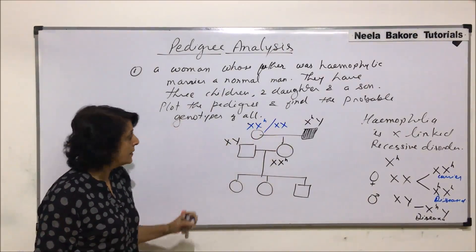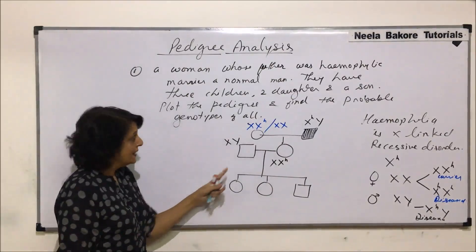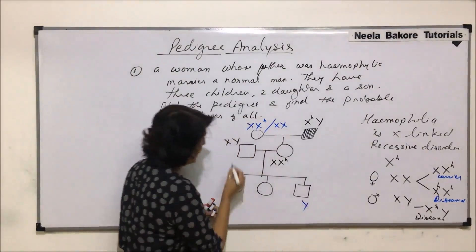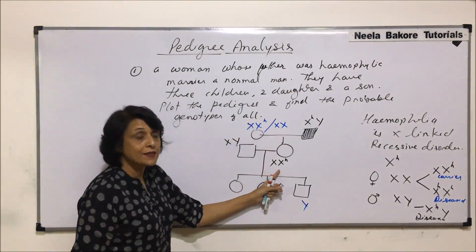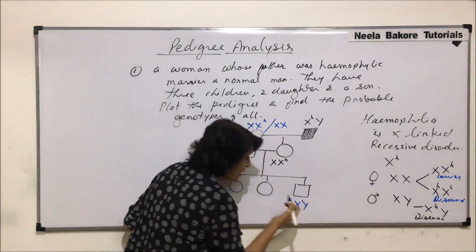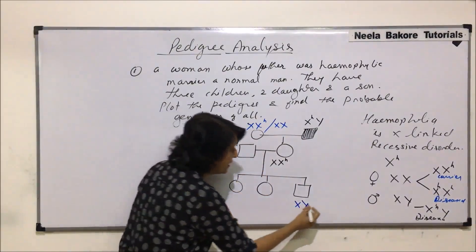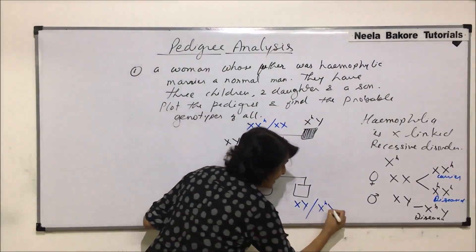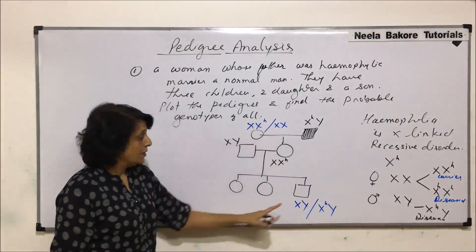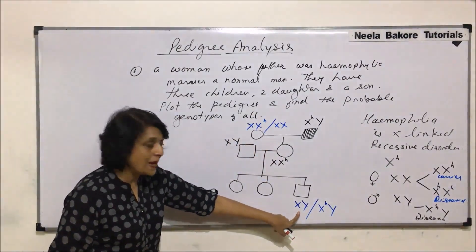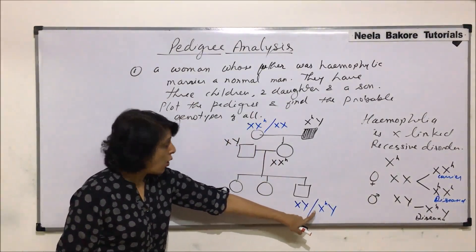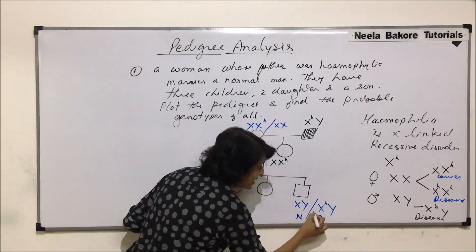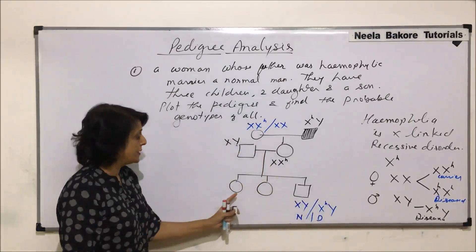For the son: he receives Y from his father and can receive either the normal dominant X or the recessive X^h from the mother. So the son could be completely normal or could have the disease — a 50-50 chance.